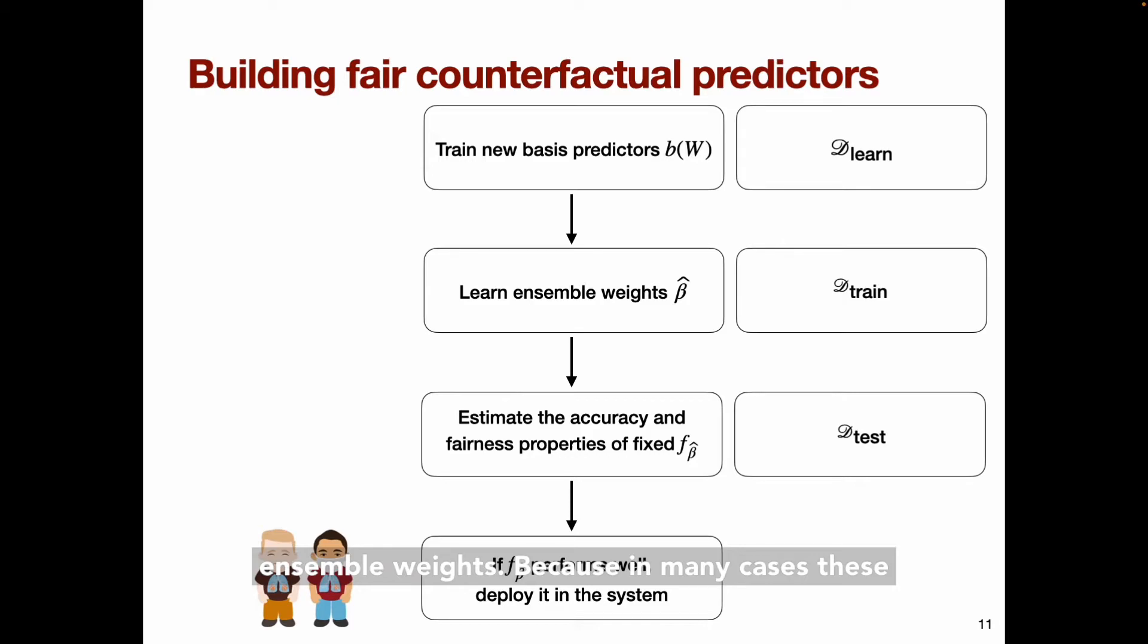Because in many cases these are high-stakes settings, you don't want to blindly deploy a predictor without understanding whether it's accurate and fair, so you would then estimate these properties on some test set D test. And only then, if it's sufficiently fair and accurate, would you deploy it in the system.